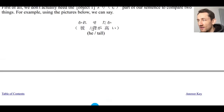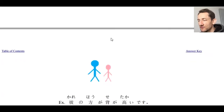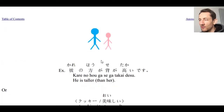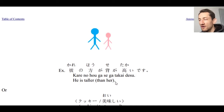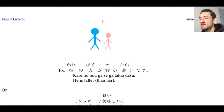For example, we have kare seiga takai. We can look at these two people — this husband and wife, for example — and we're comparing their height. We can just say kare no hoga seiga takai desu — he is taller, he is taller than her. Just like in English, we don't need to use the 'than' part if what we are comparing is obvious from context. Kare no hoga seiga takai desu.